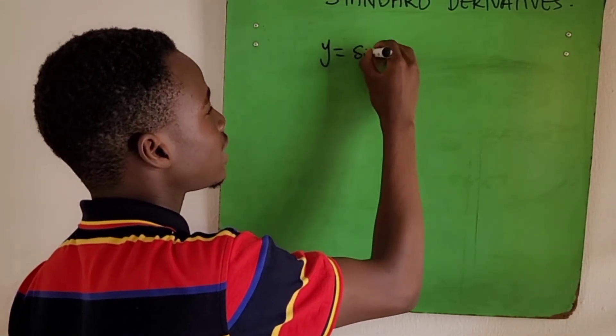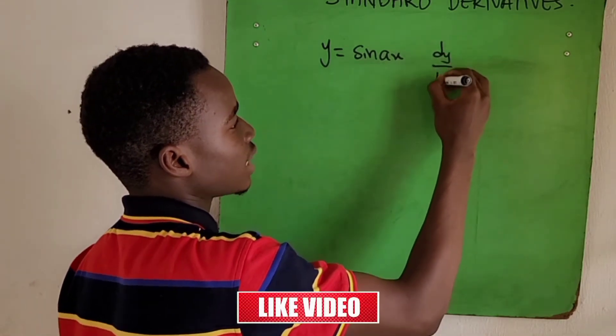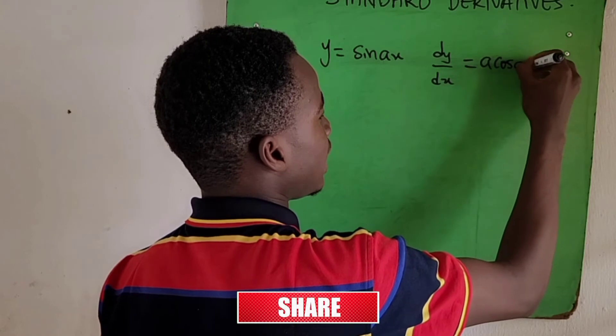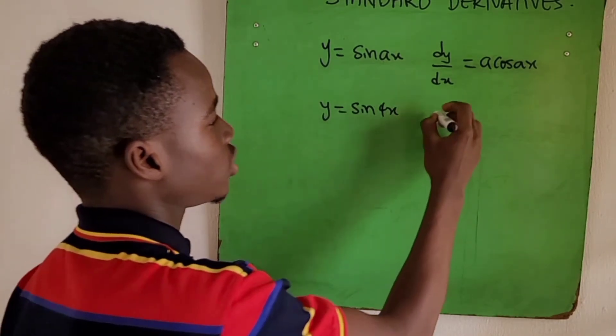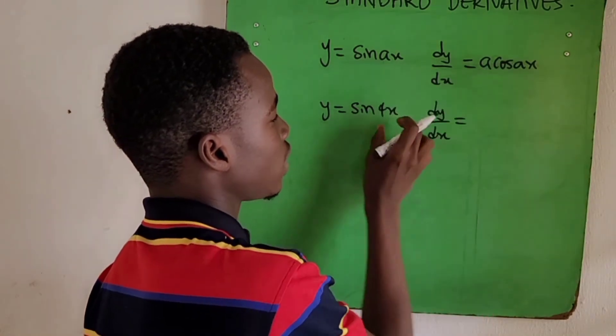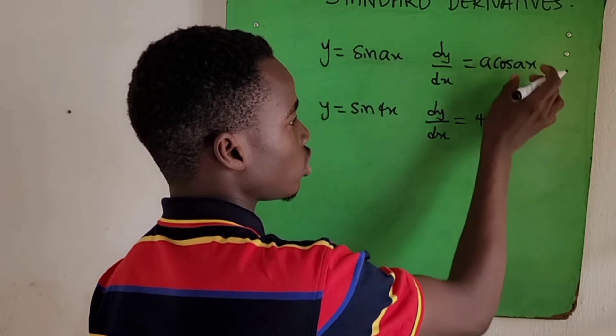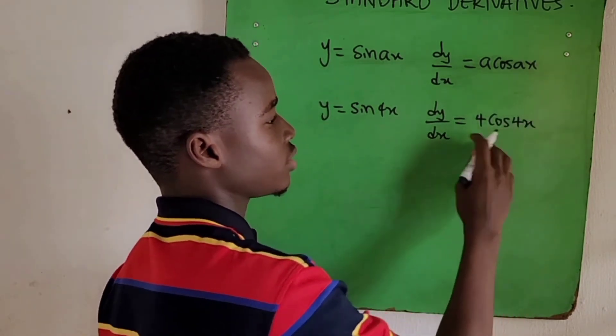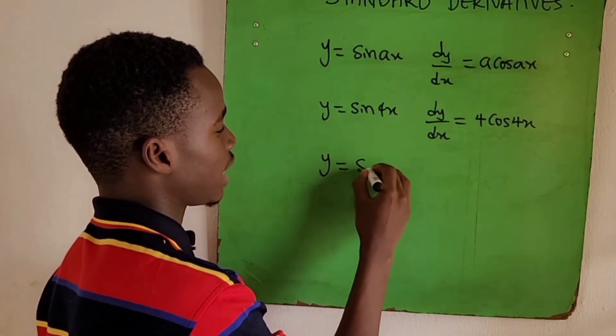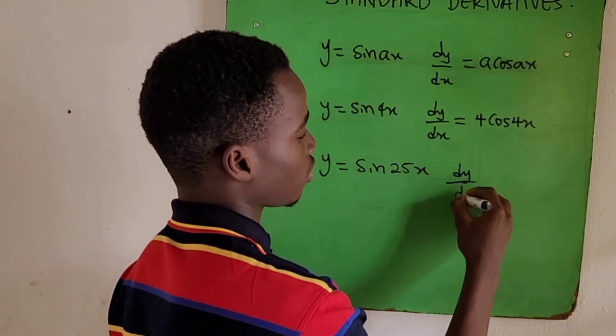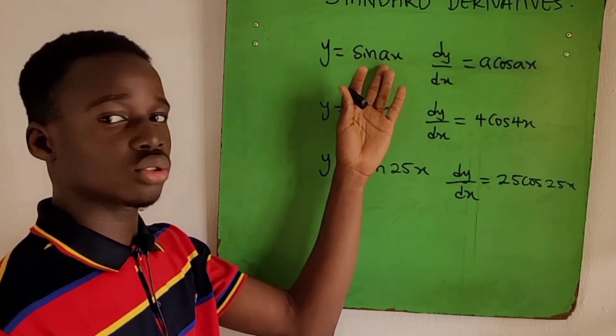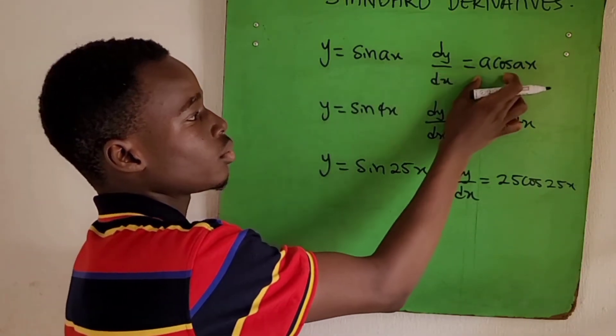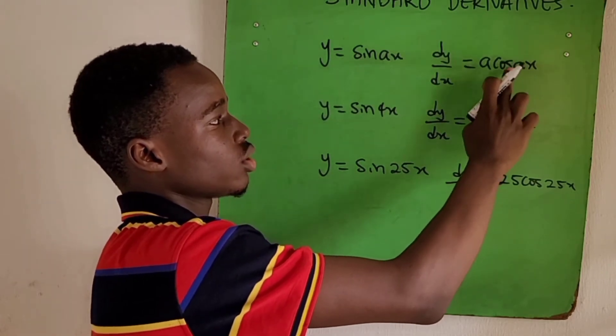Moving on to the second standard derivative: when we are given the function y = sin(ax), the standard derivative gives us dy/dx = a·cos(ax). So it's as simple as this. When we are given y = sin(4x) and we're asked to differentiate, the differential equation will be 4·cos(4x). If we're given y = sin(25x), dy/dx is 25·cos(25x). From sine it changes to cosine.